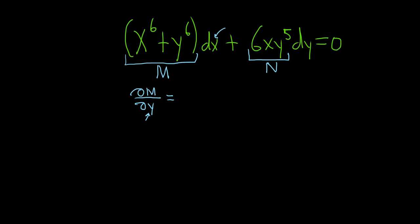In particular, X is a constant. So the derivative of X to the sixth is zero. So we get 6Y to the fifth.